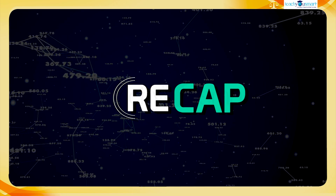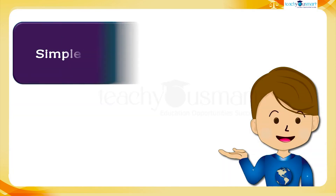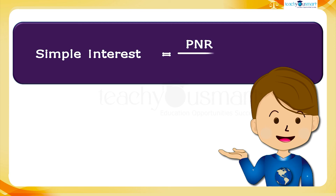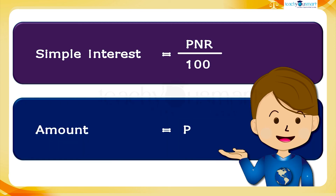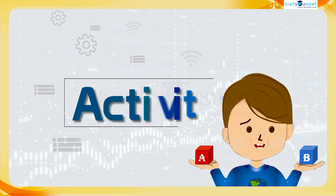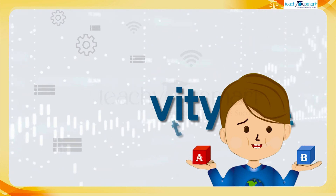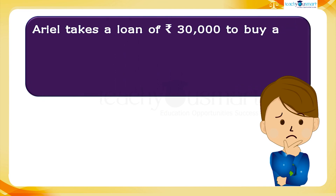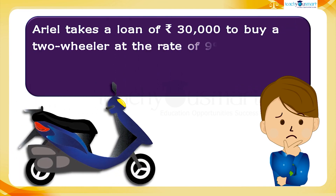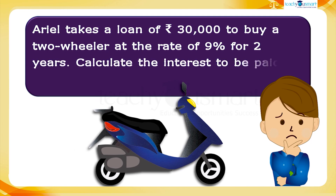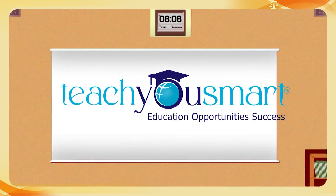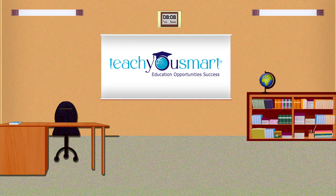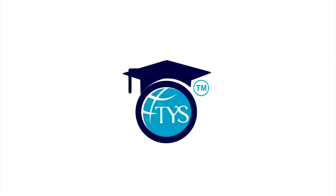Let's have a quick recap. Today we discussed simple interest. Before winding up, let's check how much you understood by doing an activity. Ariel takes a loan of 30,000 rupees to buy a two-wheeler at the rate of 9% for two years. Calculate the interest to be paid for the loan amount. That's all for now. See you all in the next class with another interesting topic. Thank you.